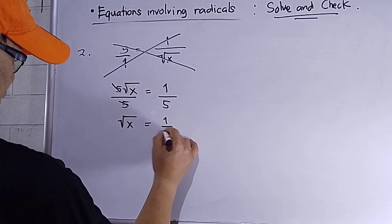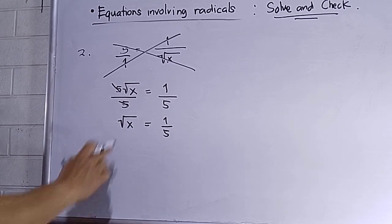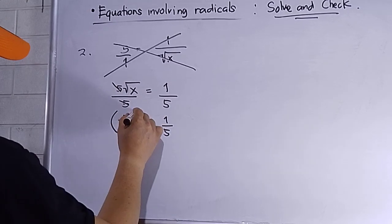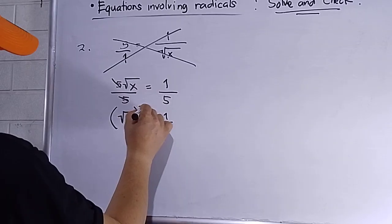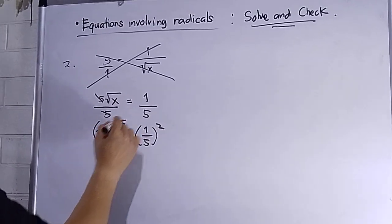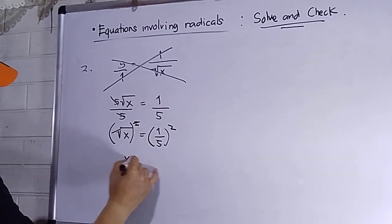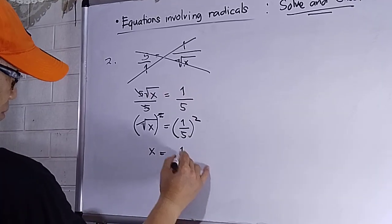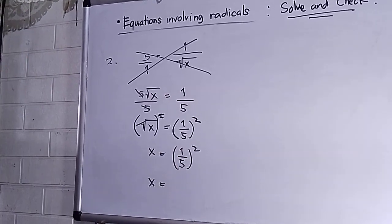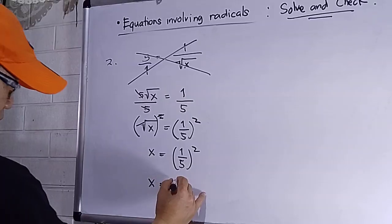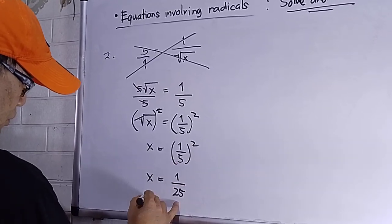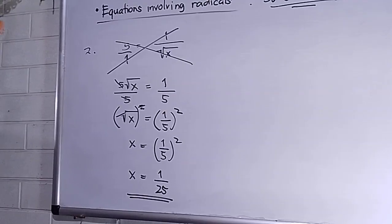To eliminate the radical symbol, I square both sides. The square root of x squared gives x, and 1/5 squared gives 1 squared over 5 squared, which is 1/25. So x equals 1/25.